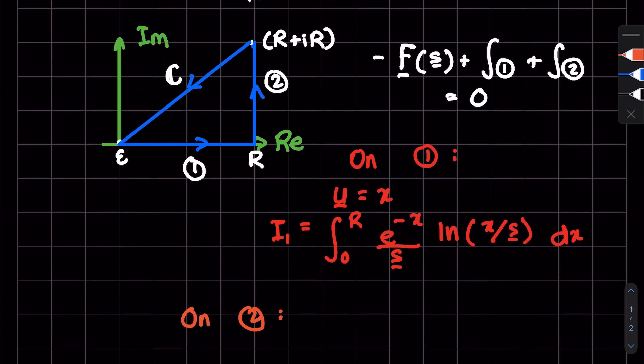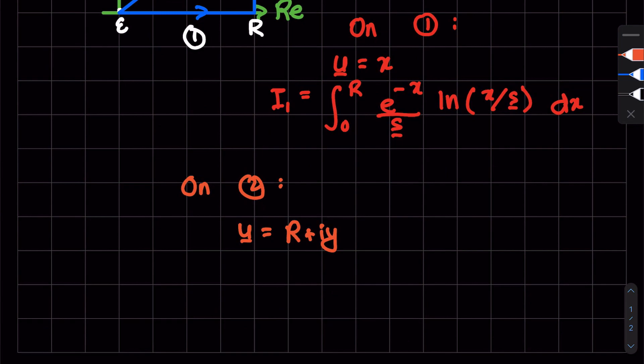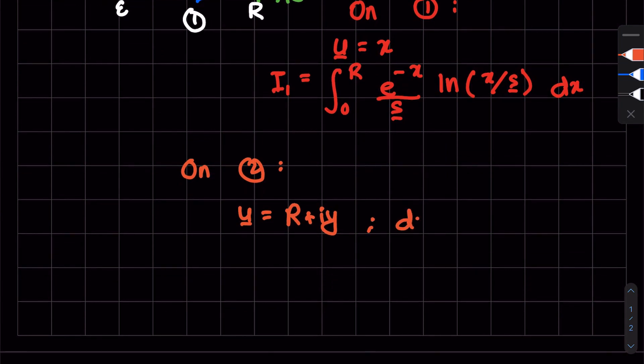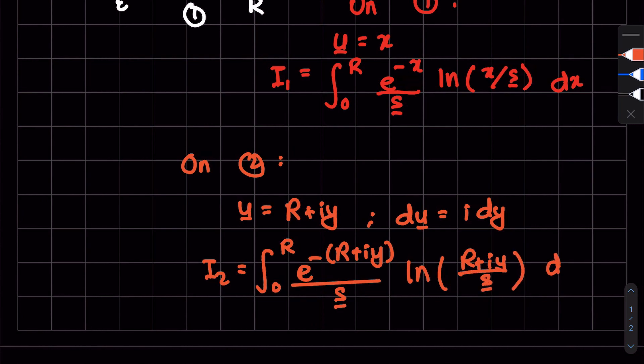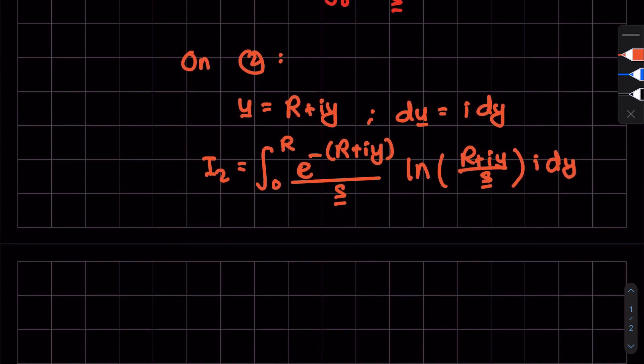Now for segment two, let me quickly choose a different color. So on two, stuff is a little bit imaginary. u is R plus iy, where we can vary y. du is i dy. With that, we have I2 as integral from zero to R, e to the minus (R plus iy), divided by complex s, natural log of (R plus iy) divided by capital s, i dy. That's fair.